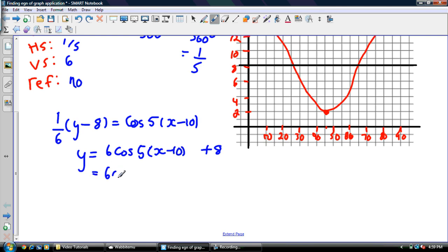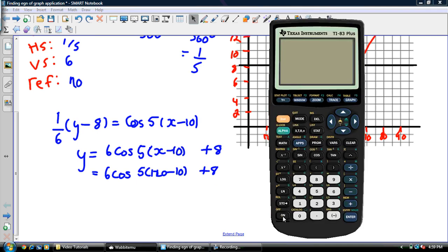I'll figure this part out first, then add on my 8. So I got 6cos(5(120 - 10)) + 8. I'll do it on my calculator. So I'm going to have cos of 5 times 110. So it's negative times 6 and then plus my 8.